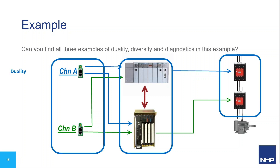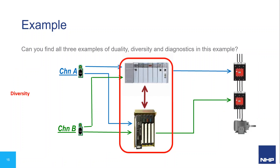For duality, we have two switches running in parallel, two logic controllers, and two contactors — a single failure in any one does not result in losing the entire system. For diversity, we're using two different types of logic controllers, each performing the same function but from completely different series, so a fault inherent in the design of one does not necessarily exist in the other.